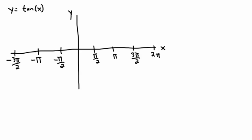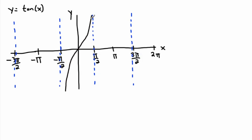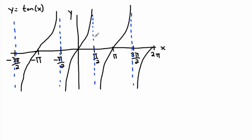Tangent has asymptotes — lines that the graph never actually reaches. Asymptotes occur at pi over 2, negative pi over 2, 3 pi over 2, and so on. Between the asymptotes, tangent starts here, passes through (0, 0), and curves up toward the asymptote on one side and down from the asymptote on the other side. It's asymptotic — it goes infinitely close without reaching those values. This pattern repeats.